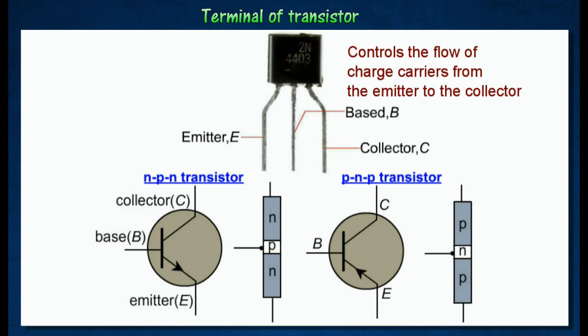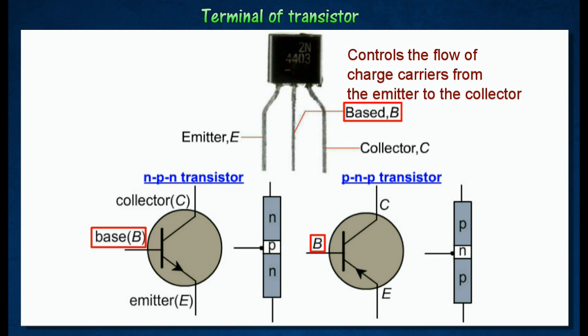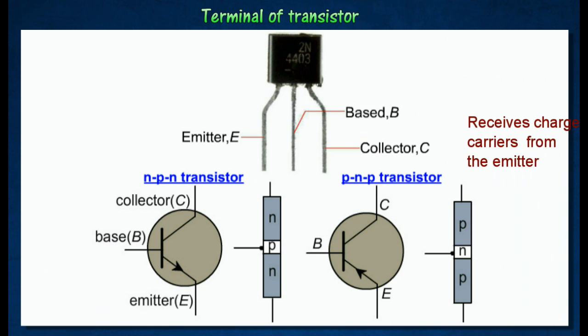The base, which forms a thin layer at the center of the transistor, controls the flow of charge carriers from the emitter to the collector. The collector receives charge carriers from the emitter.